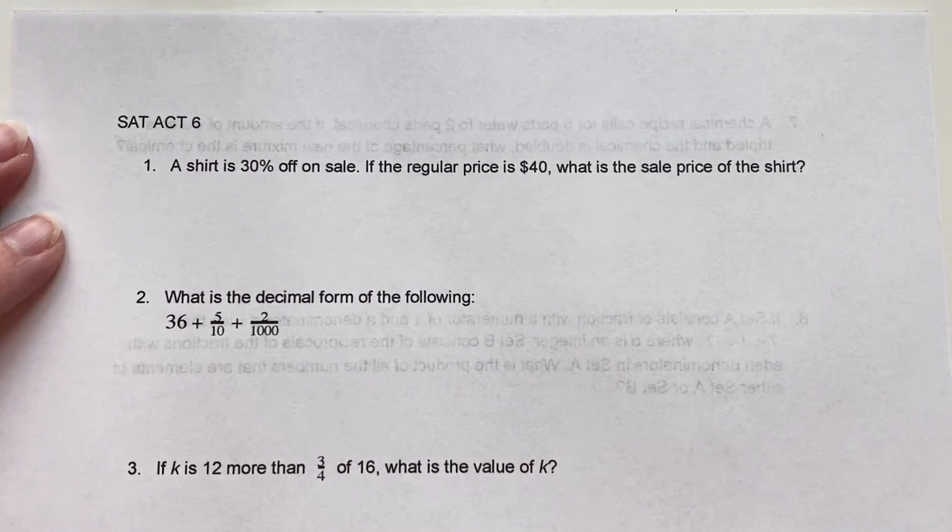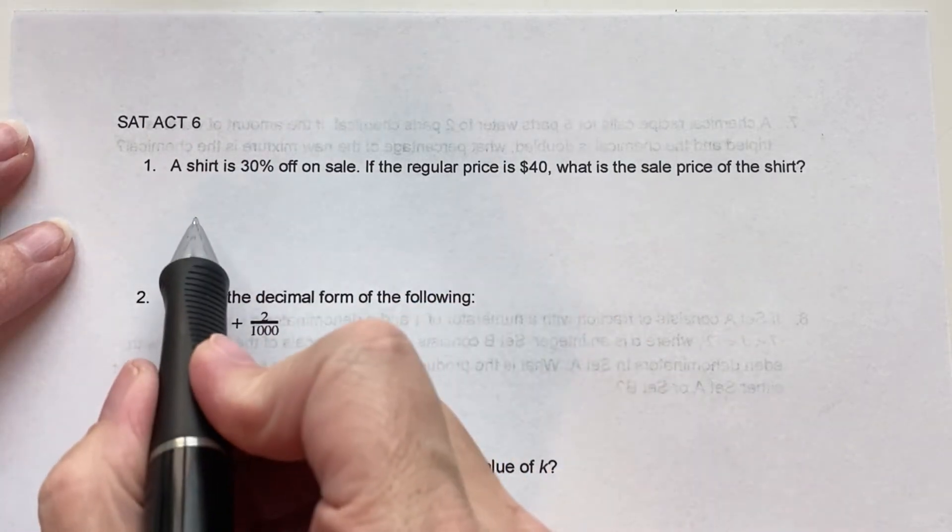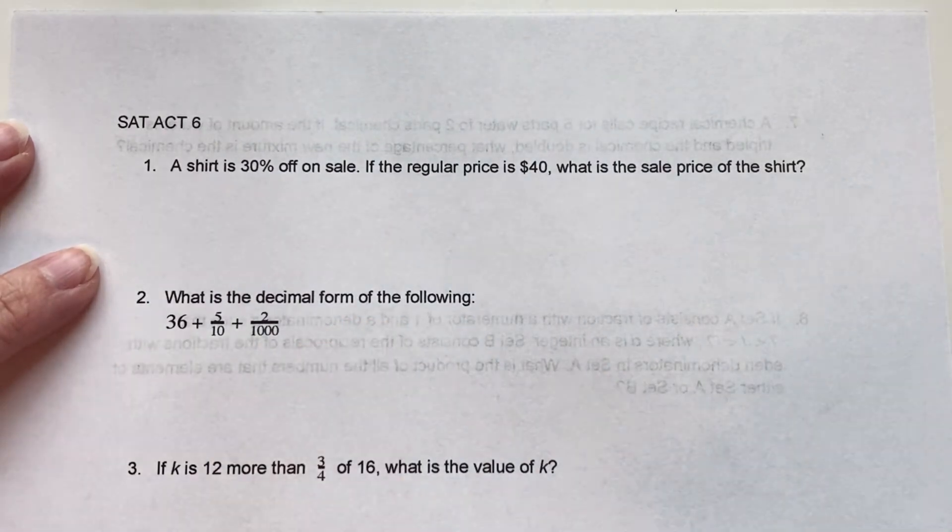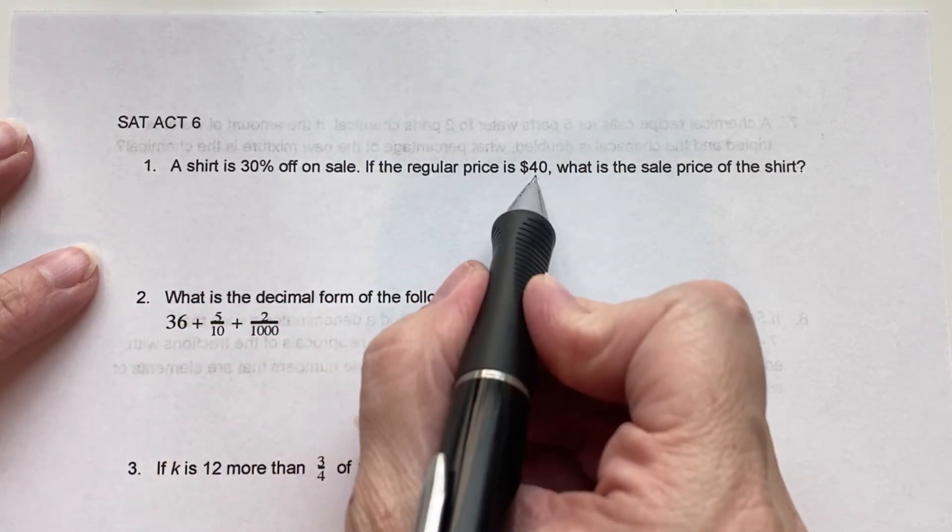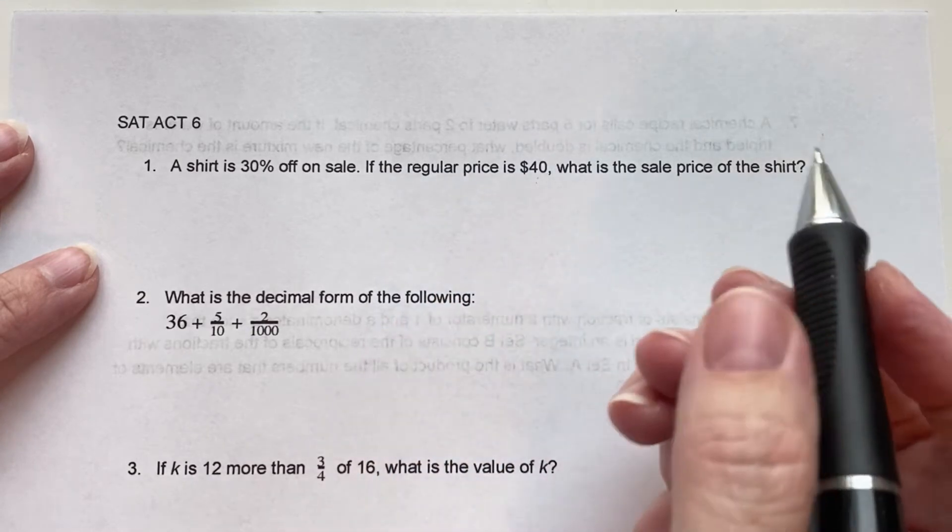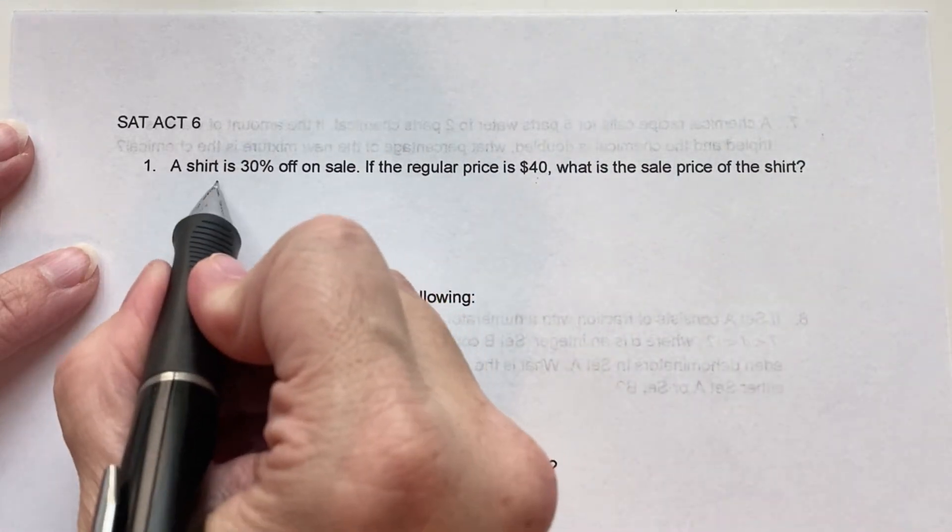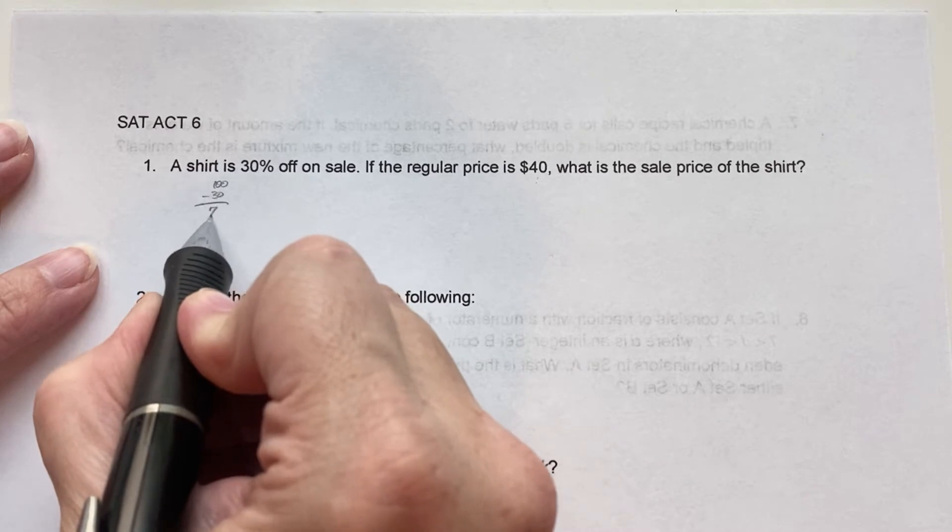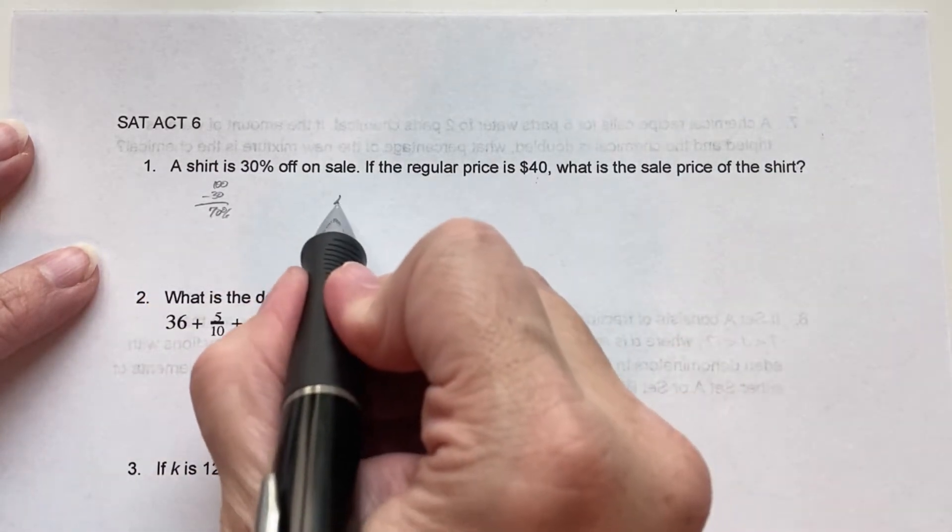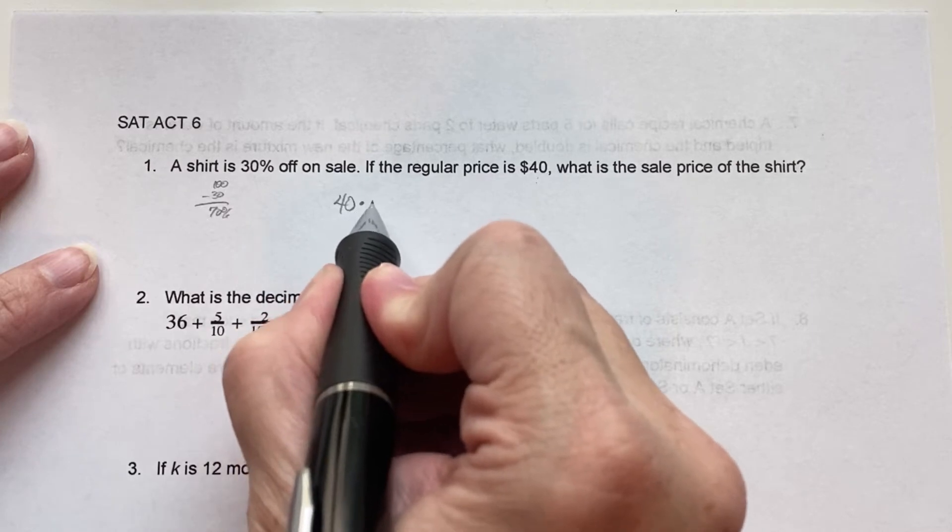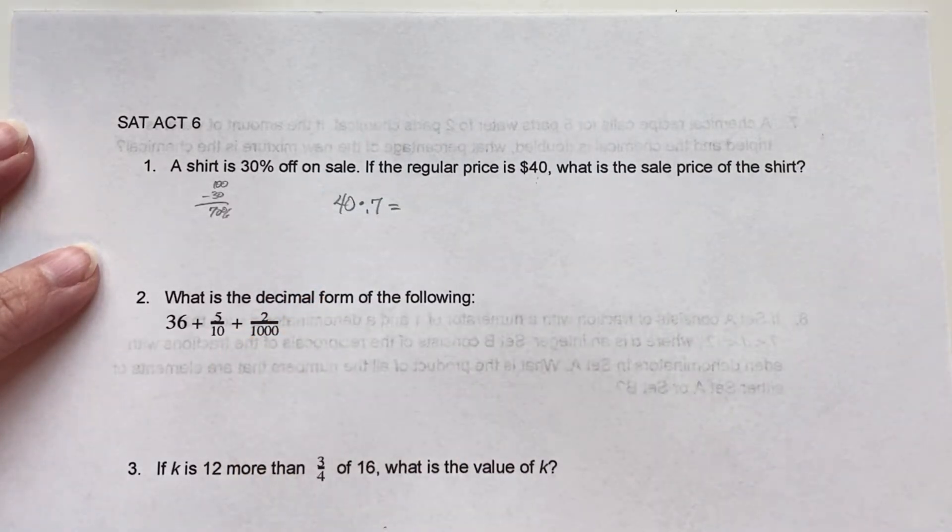A shirt is 30% off on sale. If the regular price is $40, what is the sale price of the shirt? So one of the things I like to do is actually instead of taking the shirt price and multiplying it by the percent off and then subtracting it from the original price again, what I do is I do 100 minus 30, which is 70% because that's how much you're actually going to pay.